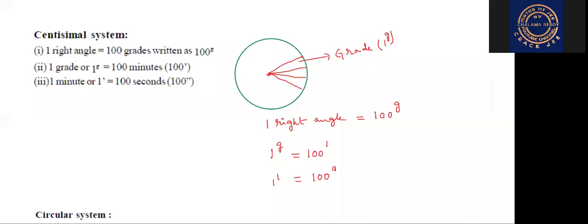There, one degree is equal to 60 minutes. Here, one grade is equal to 100 minutes — students, remember it. So once again: the total one circle is divided into 400 parts, each part is called a grade, denoted by 1^G. One right angle equals 100 grades, one grade equals 100 minutes, one minute equals 100 seconds. In the sexagesimal and centesimal systems, minutes and seconds are different — not the same.